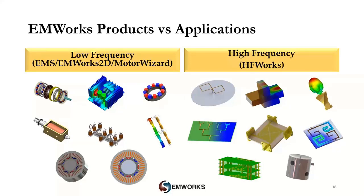Let us do a quick recap of EMS products and their related applications. We divide EMS offerings into two categories: low frequency and high frequency simulation. Within the low frequency category, we offer EMS 3D, EMWorks 2D, and Motor Wizard — used to design and simulate cables, insulators, bus bars, magnet arrays, solenoids, eddy current braking systems, wireless charging devices, transformers, and electrical machines. Within the high frequency category, we offer HFWorks, used to design and simulate antennas, waveguides, filters, resonators, and connectors.